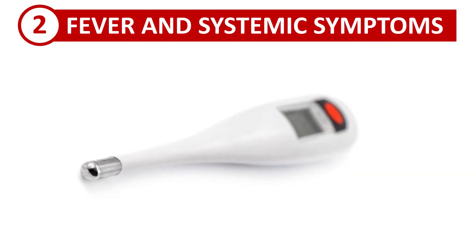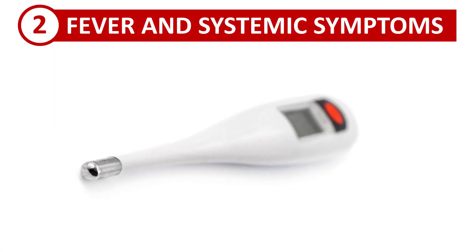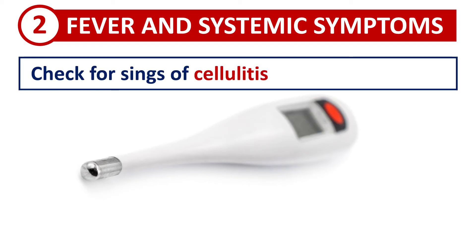Sign number two: fever and systemic symptoms. Fever with rigors and chills is really unusual in patients with typical uncomplicated intercostal zoster. So if your patient does have fever, especially if it appeared after the onset of rash, you should suspect a complication. First, look for signs of cellulitis. These painful blisters — people often scratch and touch them — creating the perfect opportunity for bacteria like streptococci and staphylococci to enter the skin and cause cellulitis.